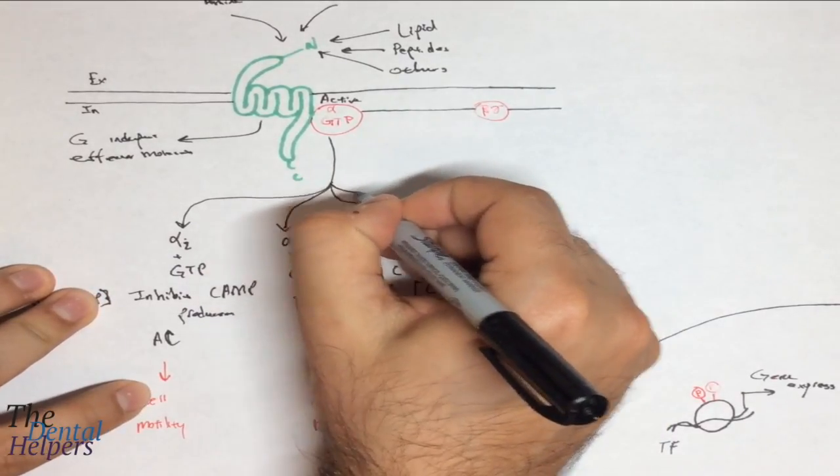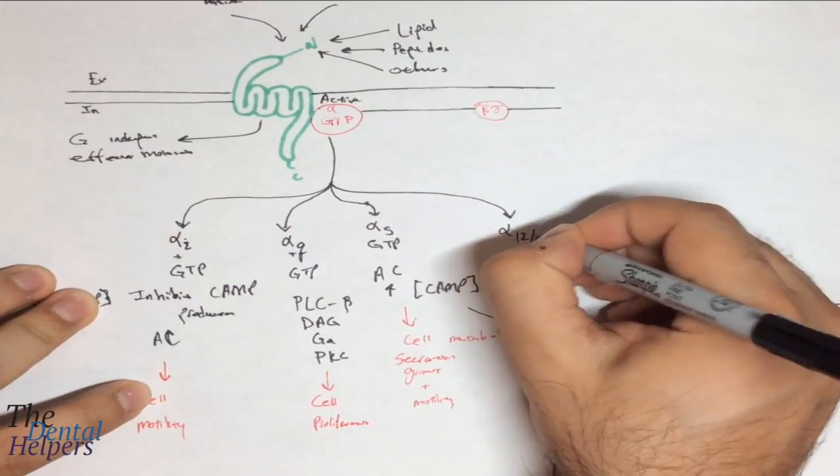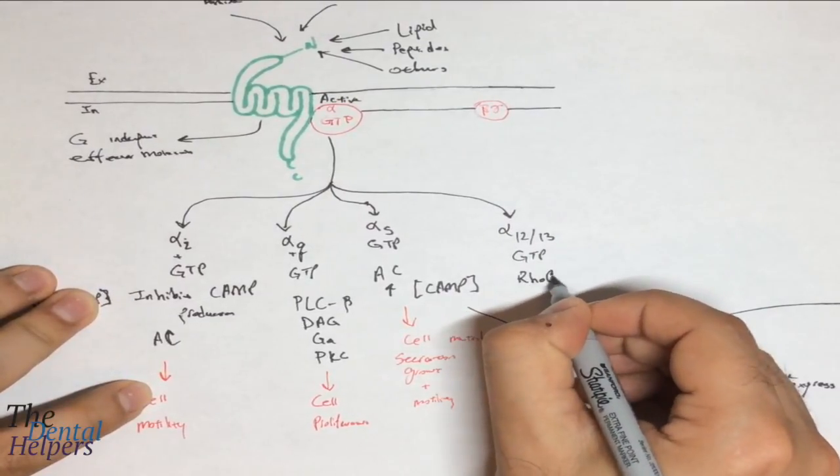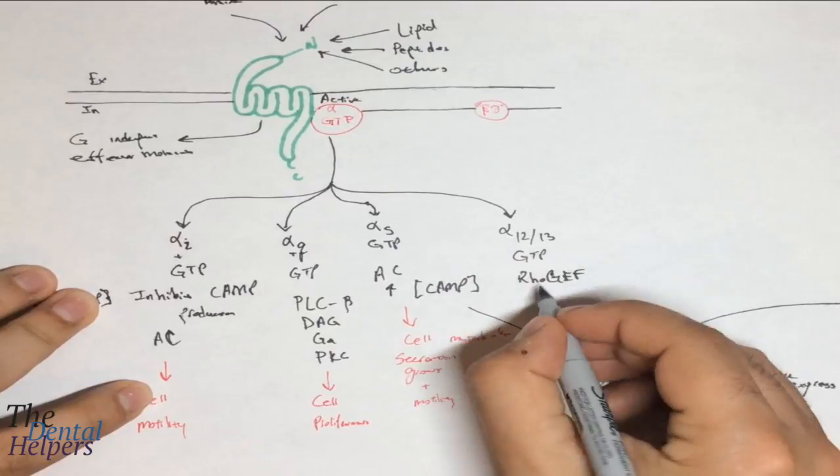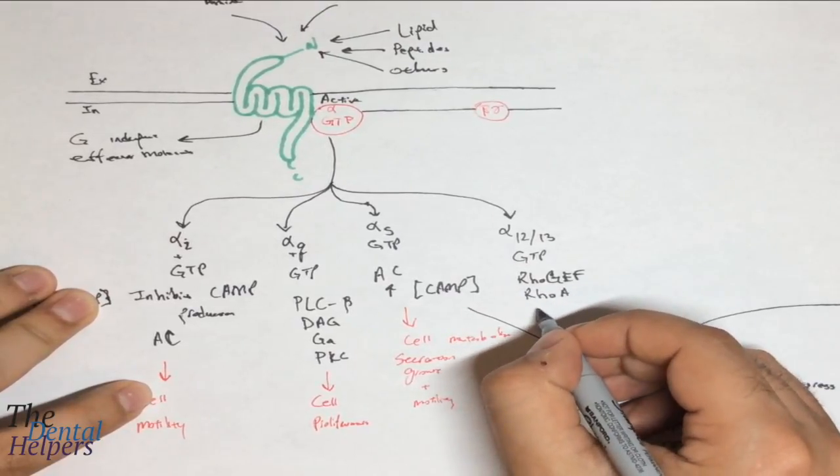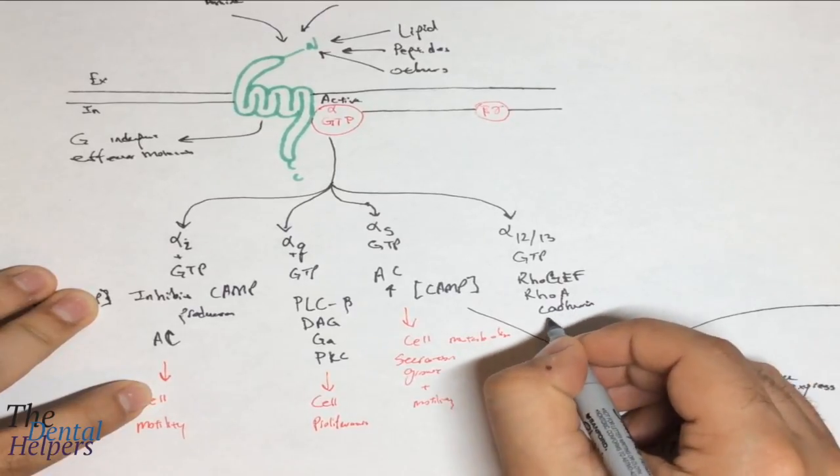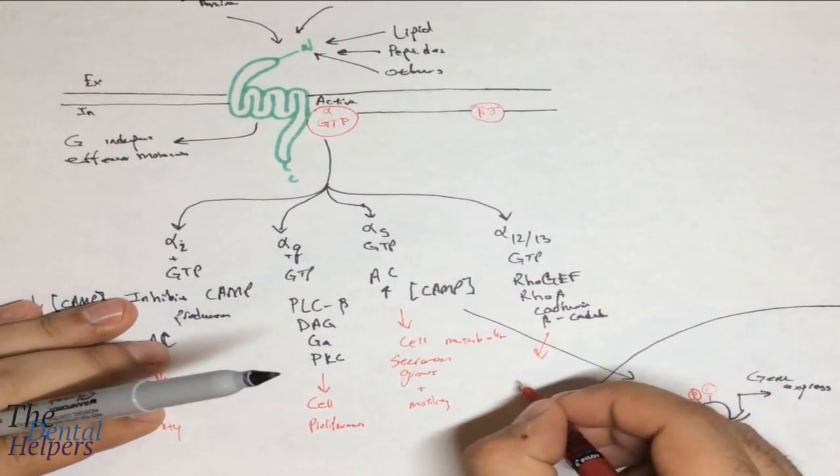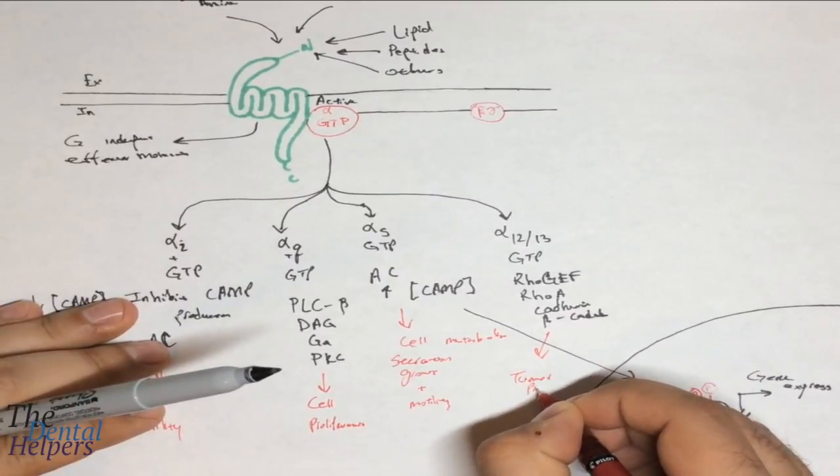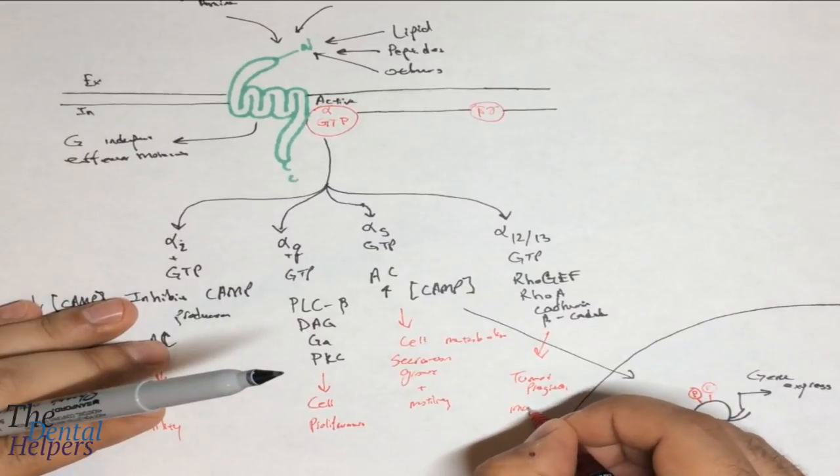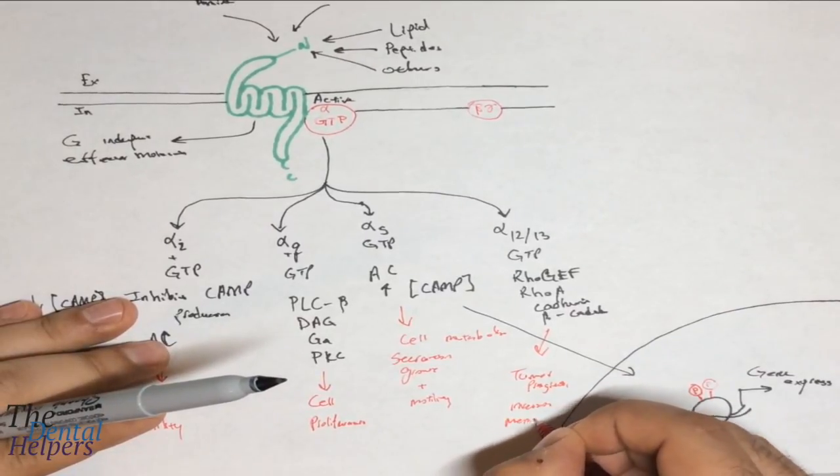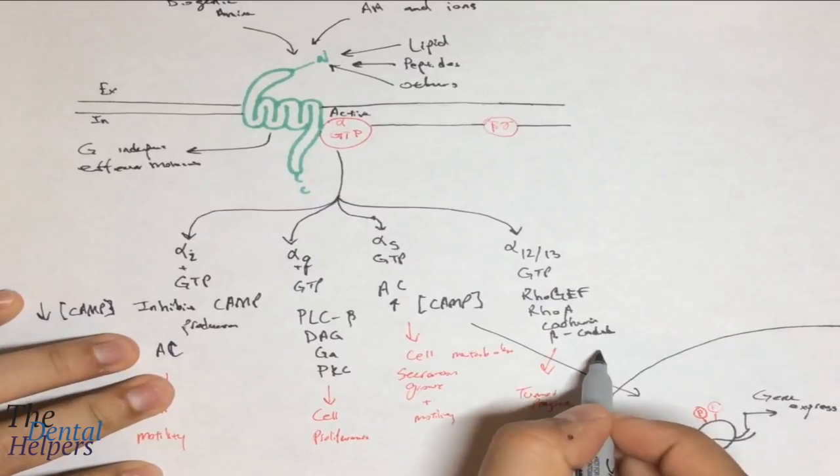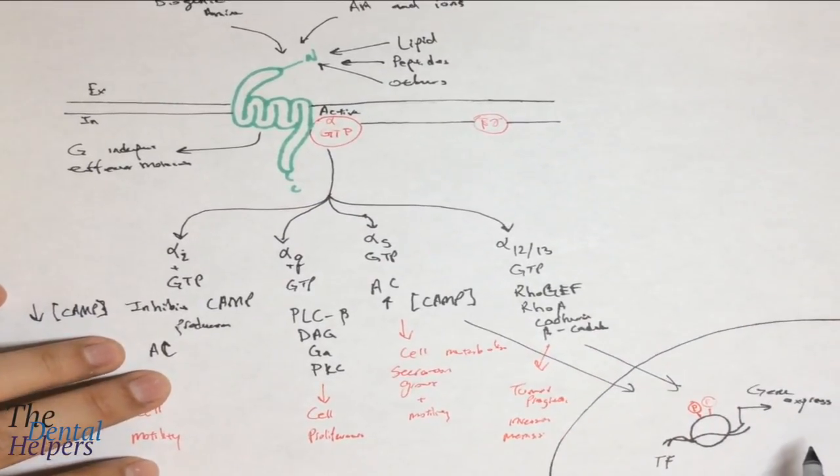We also have in this category the last alpha subunit, which is alpha 12/13, when bound to GTP. This is your Rho GEF pathway. It's also your Rho A, cadherin, and beta-cadherin. What this is involved in is tumor progression, invasion, and metastasis. This group, if you think about it, is really involved with cancer. This is also going to go into the nucleus and affect gene expression and regulation.